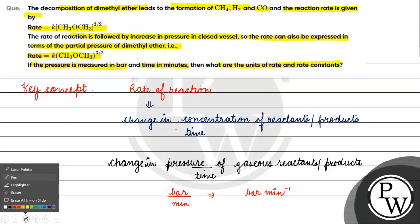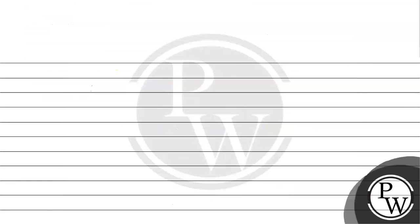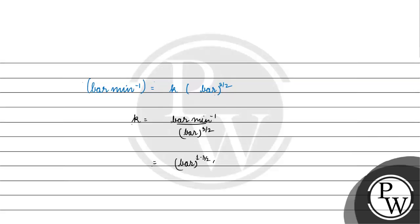Now, for the unit of rate constant K: rate equals K times P^(3/2), so K equals rate divided by P^(3/2). That gives us bar per minute divided by bar^(3/2), which equals bar^(1 - 3/2) per minute, which is bar^(-1/2) minute^(-1). This is the unit of the rate constant K.